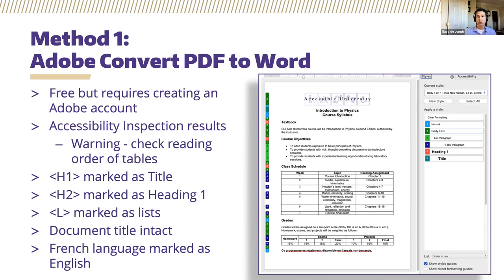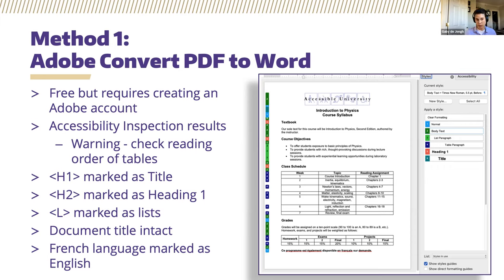The first tool was Adobe's Convert PDF to Word — completely web-based but required creating an Adobe account. Running the accessibility checker gave a warning to check reading order of tables. The table header did not stick when converted back to Word. The H1 was marked as a title style, H2s were marked as H1 — which can be confusing. Lists were still marked as lists, the document title was intact, but the French language section was marked as English.